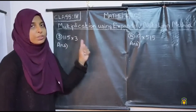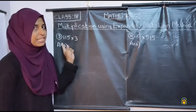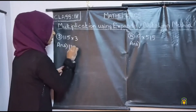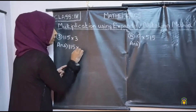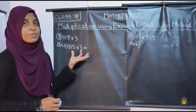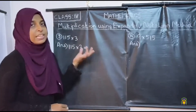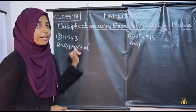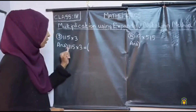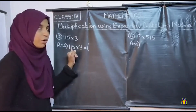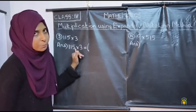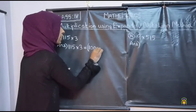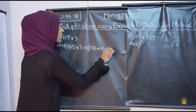Let's do the next question: 115 into 3. Here 115 is a 3-digit number and 3 is a 1-digit number. First, we want to write 115 in its expanded notation. Tell me children, what is the expanded notation for 115? Here 1 is in the hundreds place, the second 1 is in the tens place, and 5 is in the ones place.